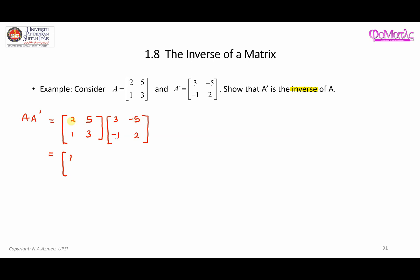Continuing the multiplication: 1×3 + 3×(-1) = 0, and 1×(-5) + 3×2 = -5 + 6 = 1. So the result is a 2×2 identity matrix, confirming that A' is the inverse of A.